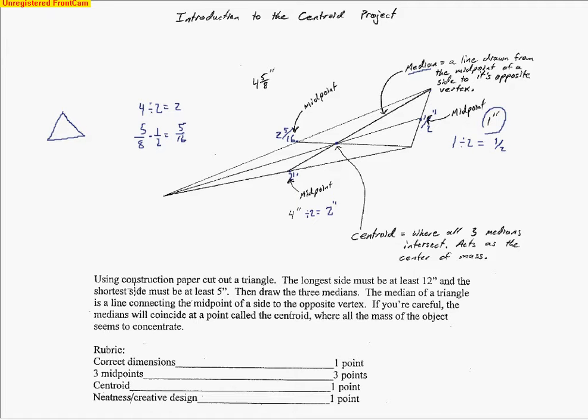For our project, it's out of six points. You'll use construction paper because construction paper is a little thicker and works better. It doesn't matter what color it is, but I do want you to put some sort of design on it later. You'll get some credit for doing that—one point for neatness and creativity.